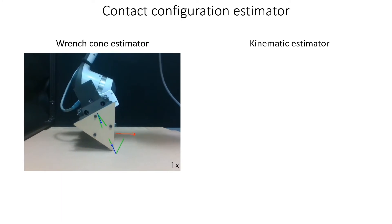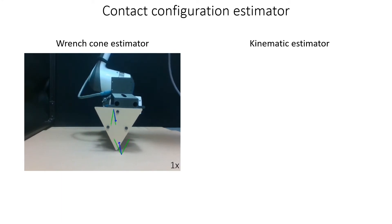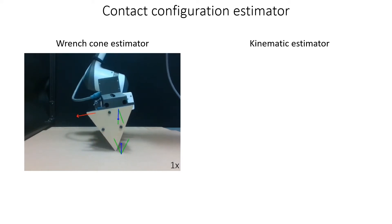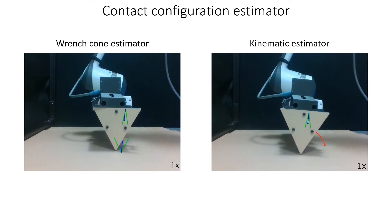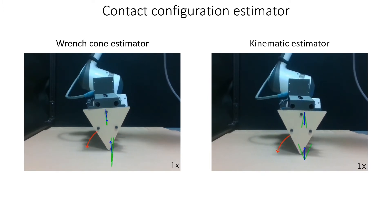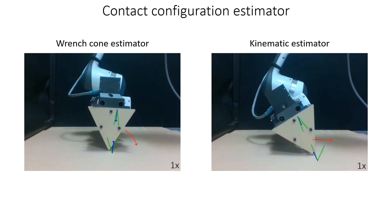The estimated friction cones are then used to differentiate between sticking or sliding at both contacts. The kinematic estimator synthesizes the time history of robot proprioception into a prediction of the external contact's location using a recursive least squares based approach.